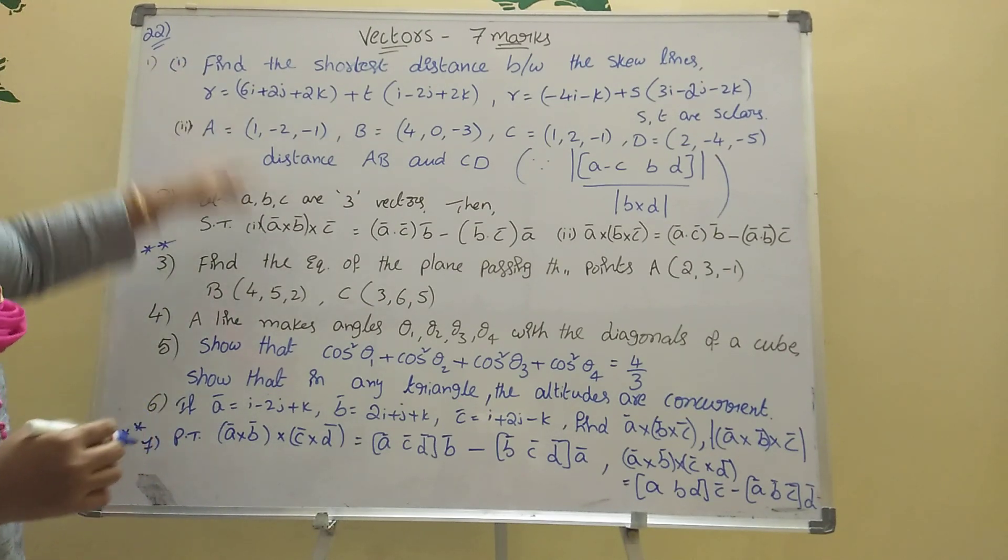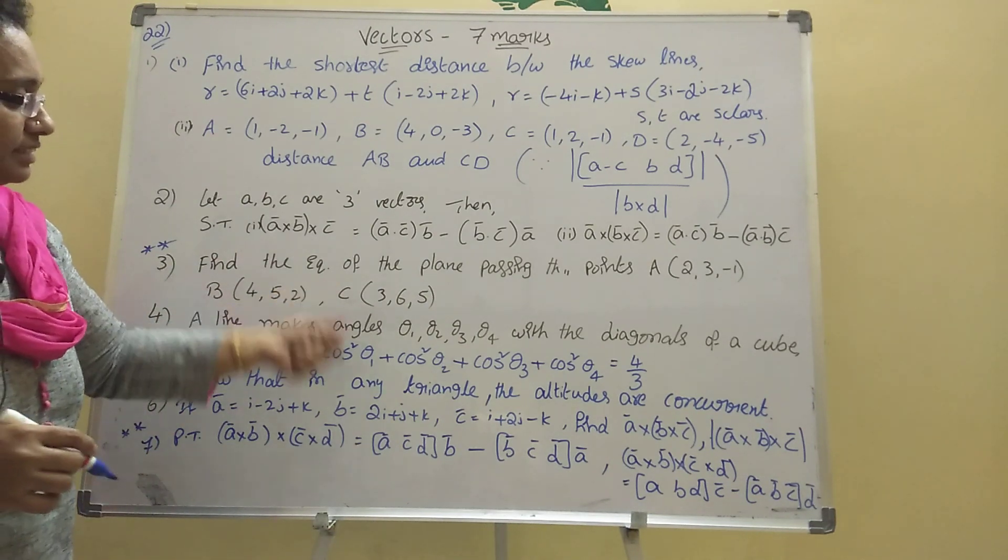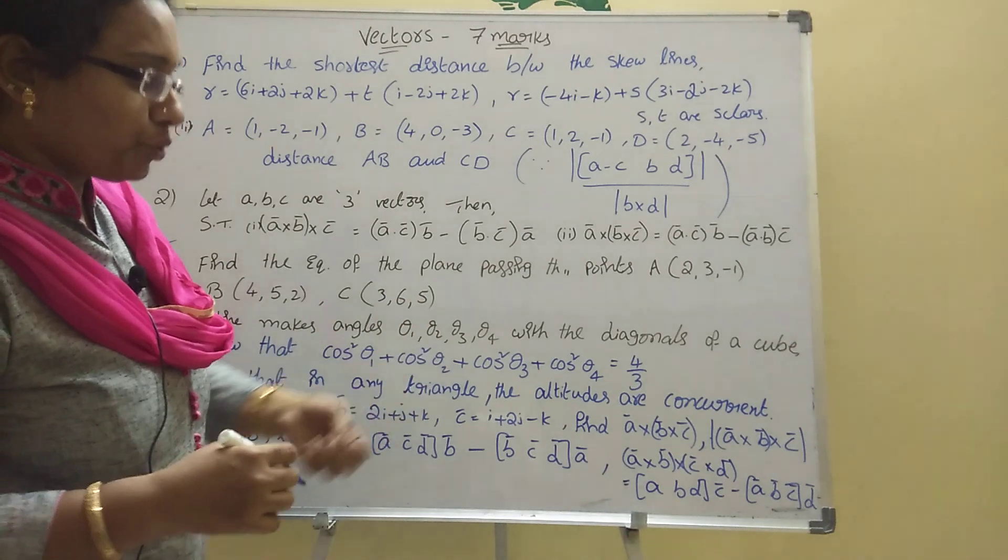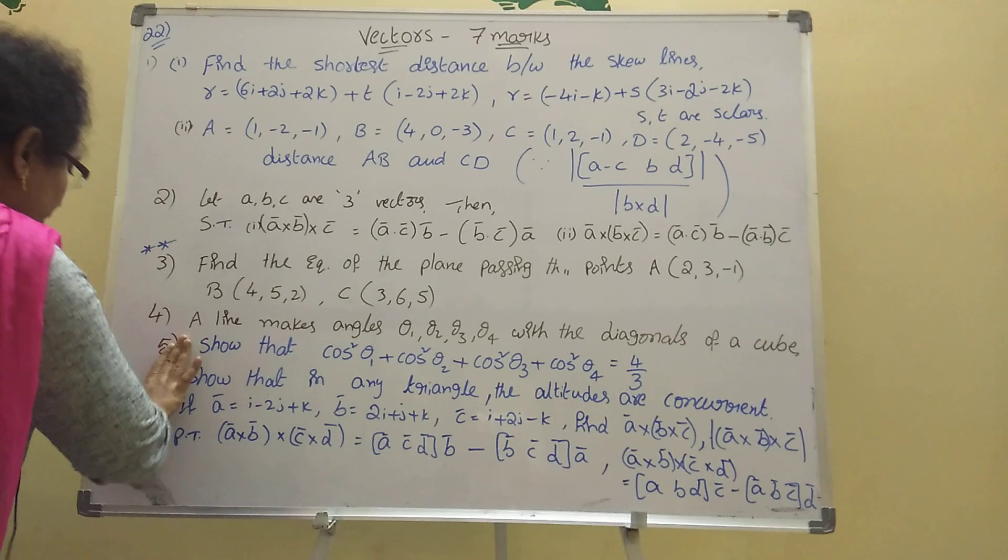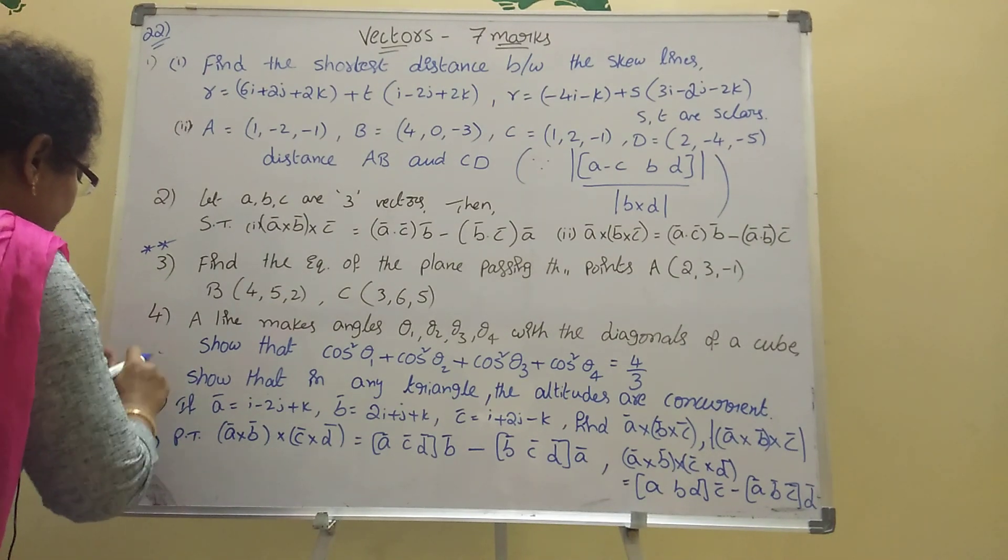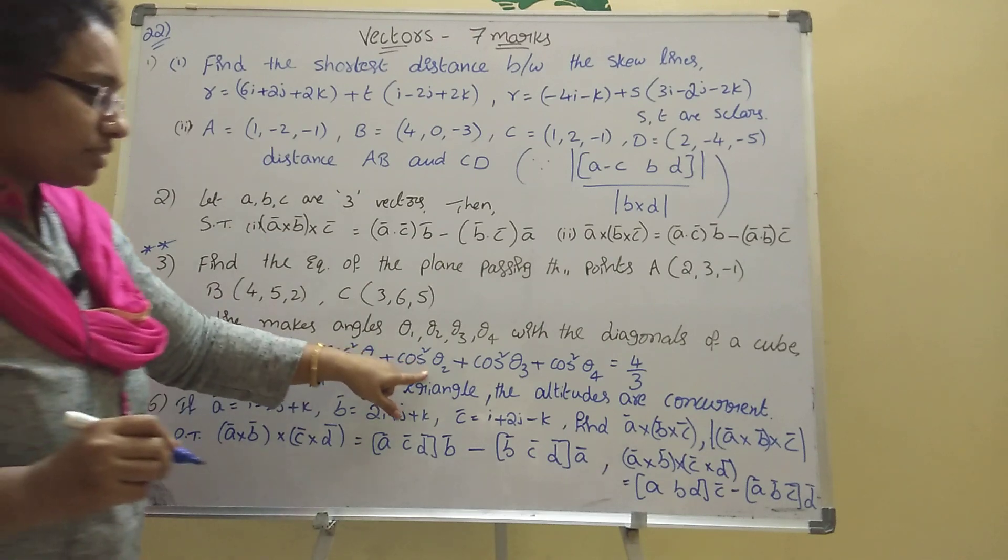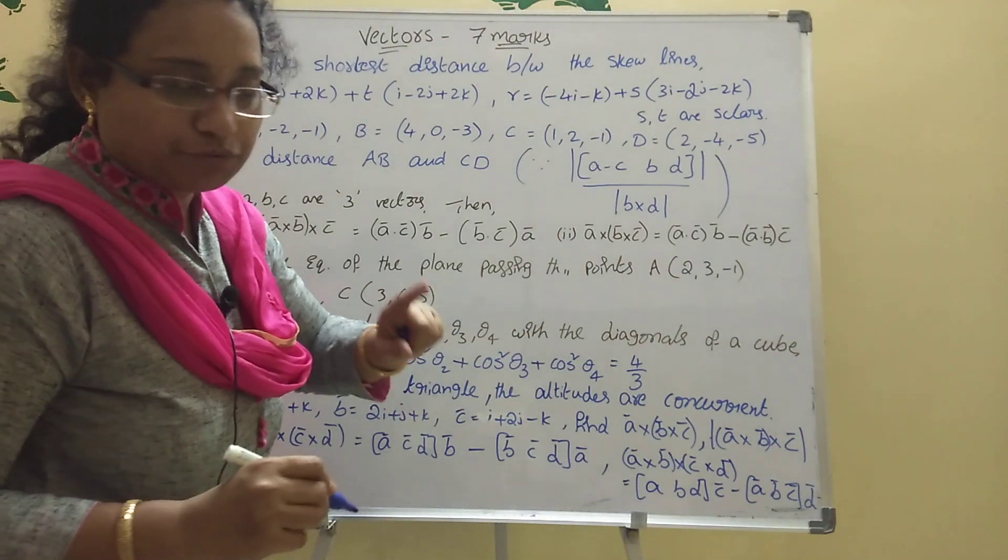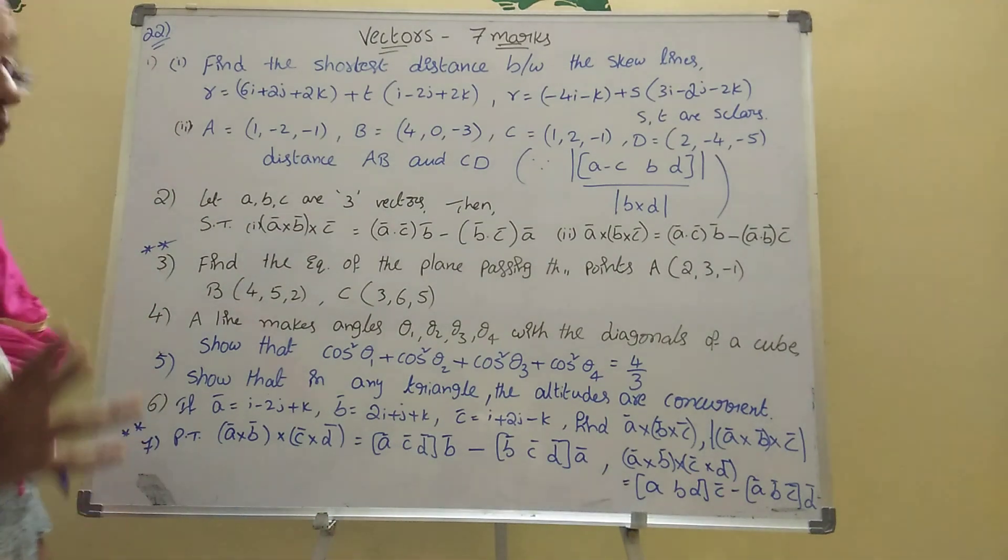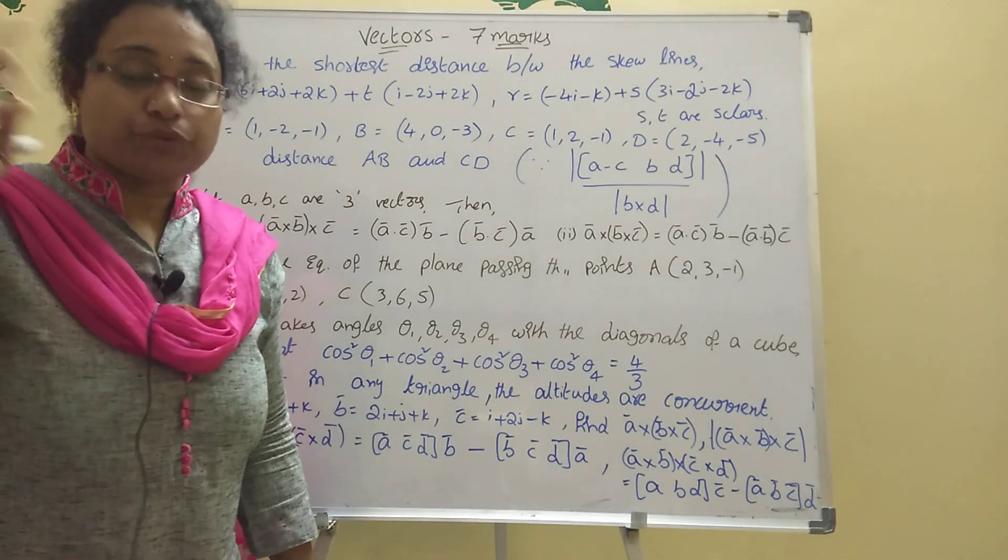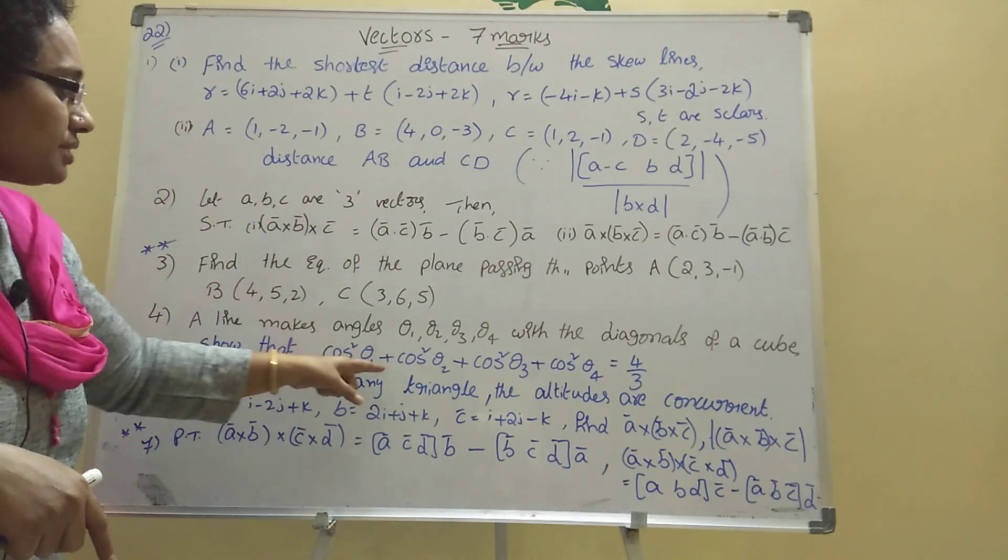Fourth problem: A line makes angles θ₁, θ₂, θ₃, θ₄ with the diagonals of a cube. Then show that cos²θ₁ + cos²θ₂ + cos²θ₃ + cos²θ₄ = 4/3. This is very important. Cube formulas, cube sums - already I told. In 4 marks two problems are there, and in 7 marks two problems are there. These are very important.